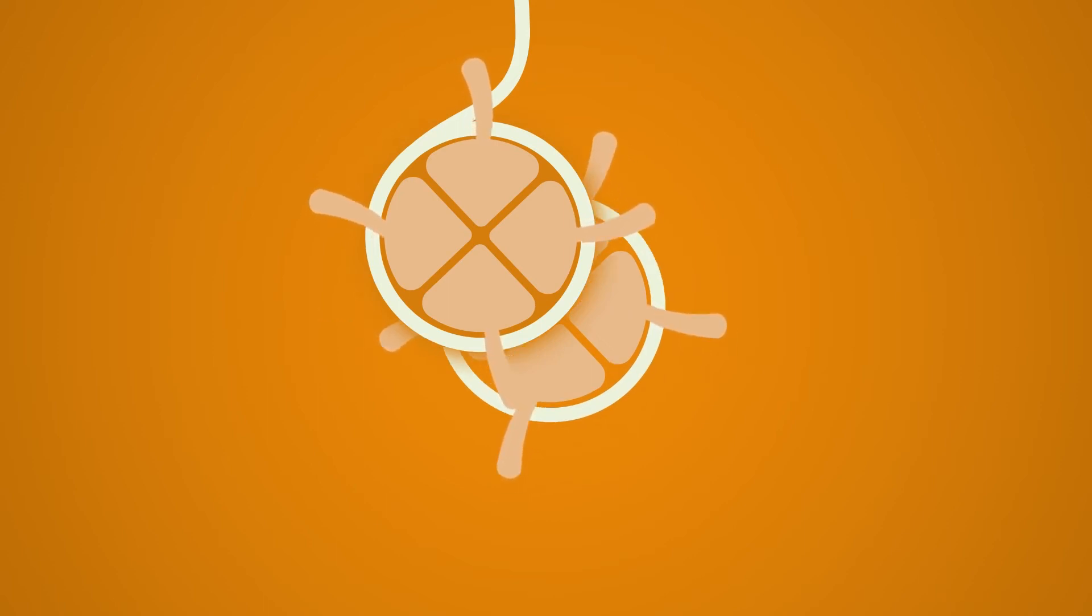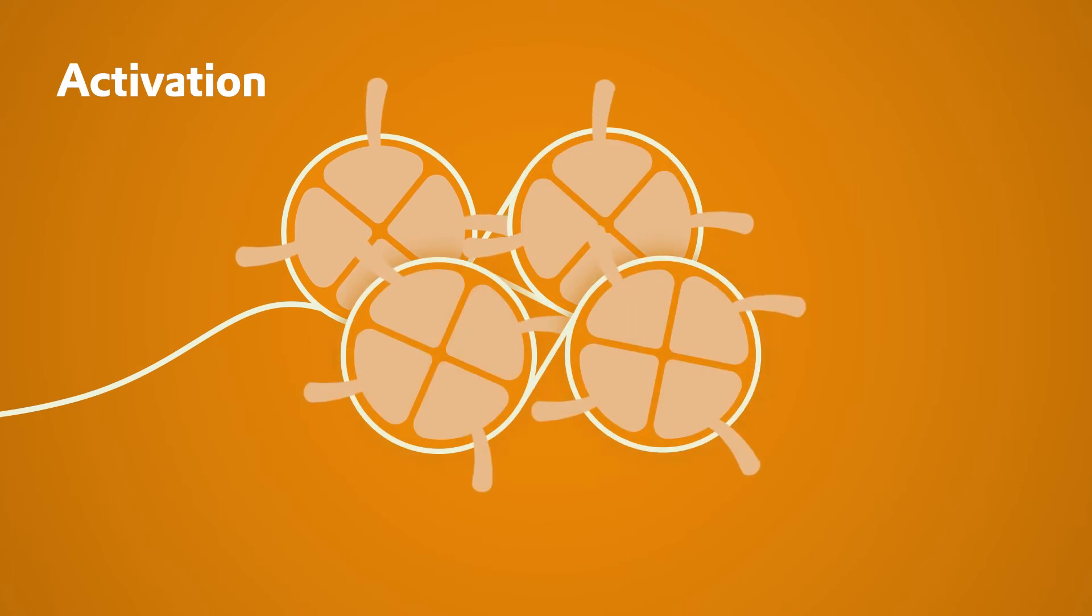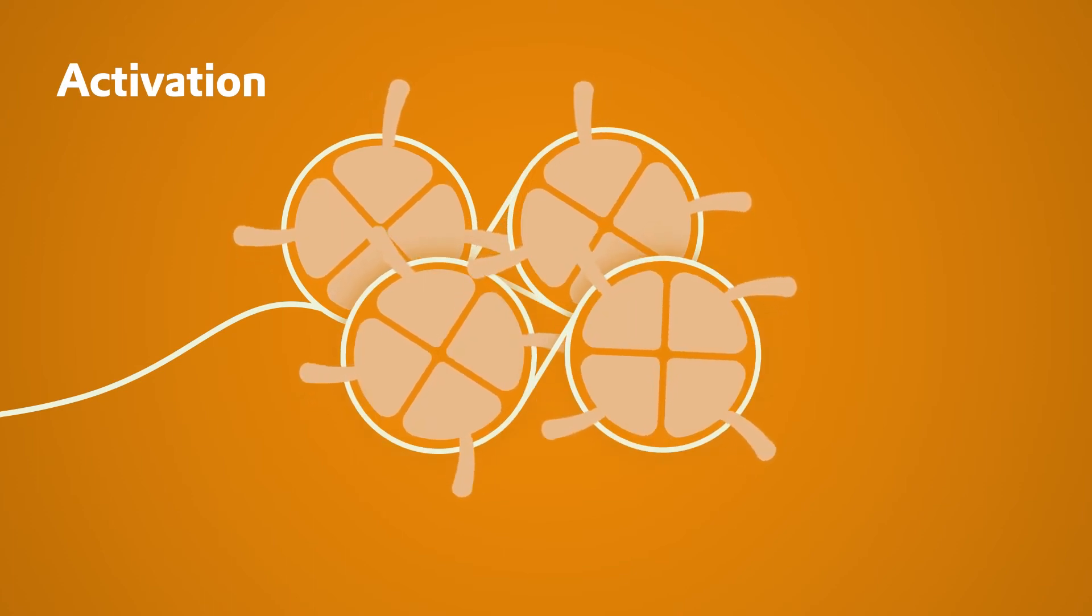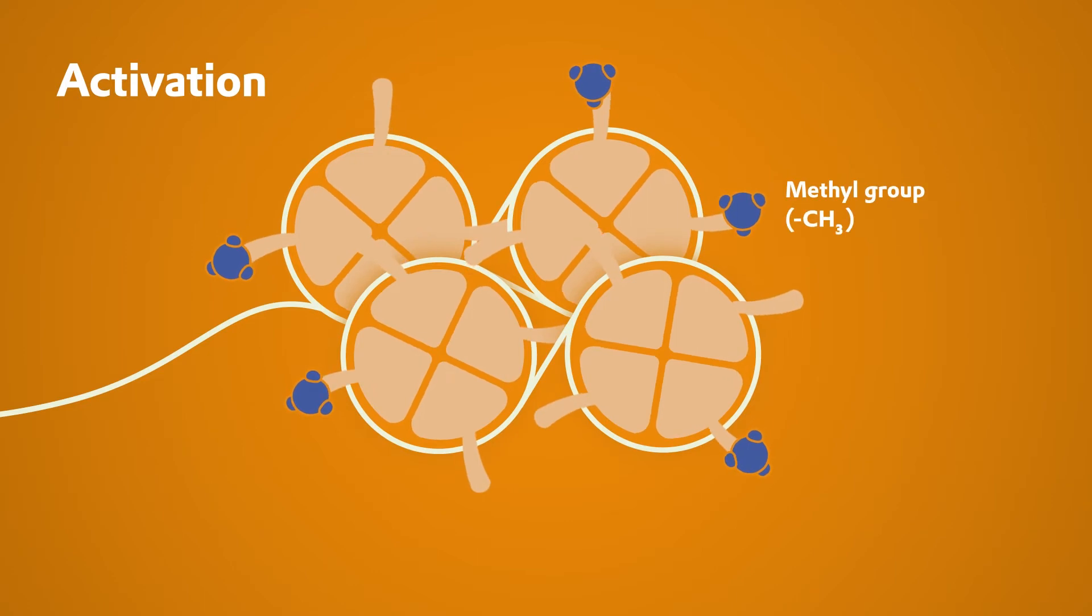Methyl groups can bind to the ends of the histones. These consist of one carbon atom and three hydrogen atoms.